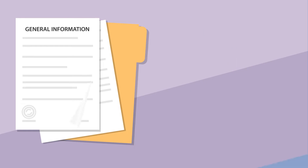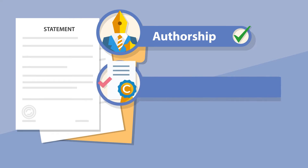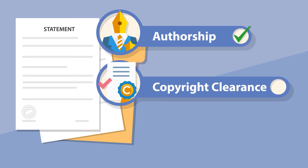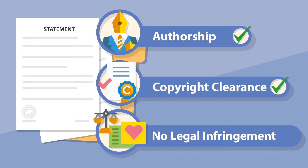Within a publishing agreement, authors are generally asked to warrant that they created the work, and therefore they own copyright. If third-party copyright material is included, the author has the necessary permission from the copyright owner to include that material. And the work contains no unlawful statements, does not infringe the privacy of others, or contain material or instructions that might cause harm or injury.